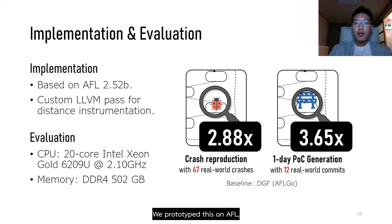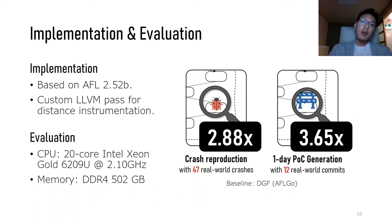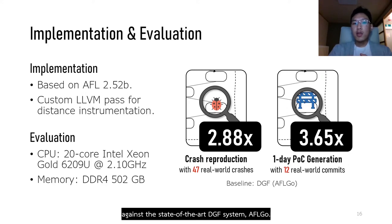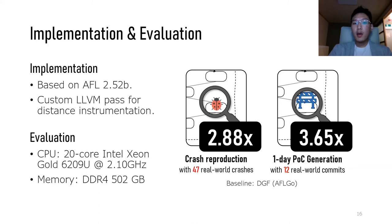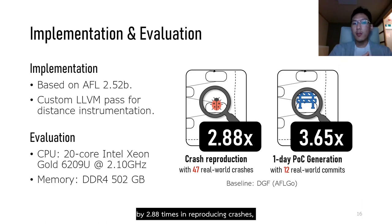We prototyped CDGF on AFL and implemented the distance instrumentation using LLVM IR. Using this prototype, we evaluated 48 CVE crashes and 20 fix commits against the state-of-the-art directed greybox fuzzer AFLGo. Our prototype outperforms AFLGo by 2.88 times in reproducing crashes, and 3.65 times in generating proof-of-concept inputs.